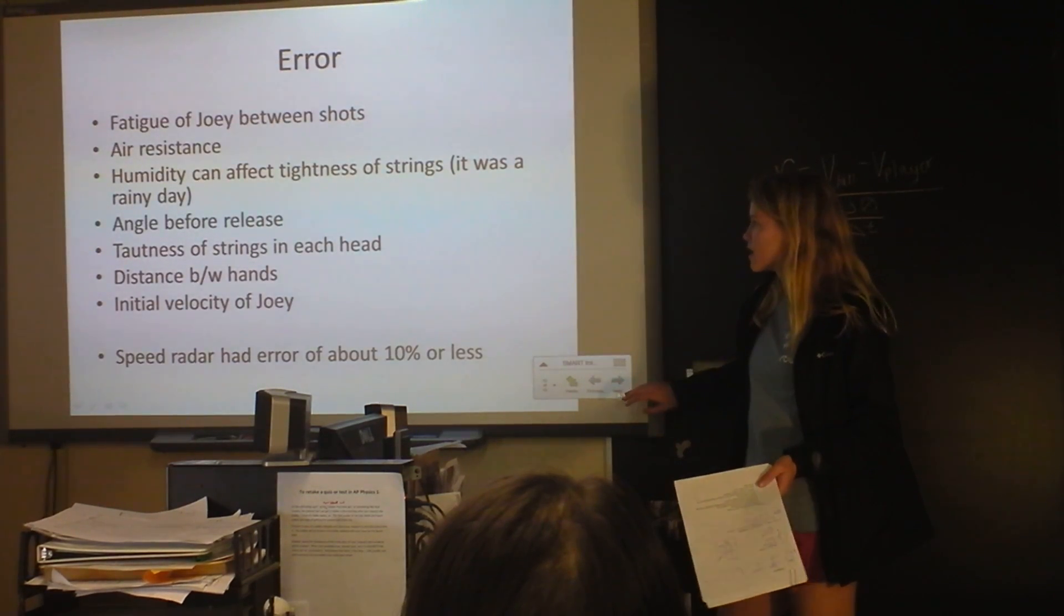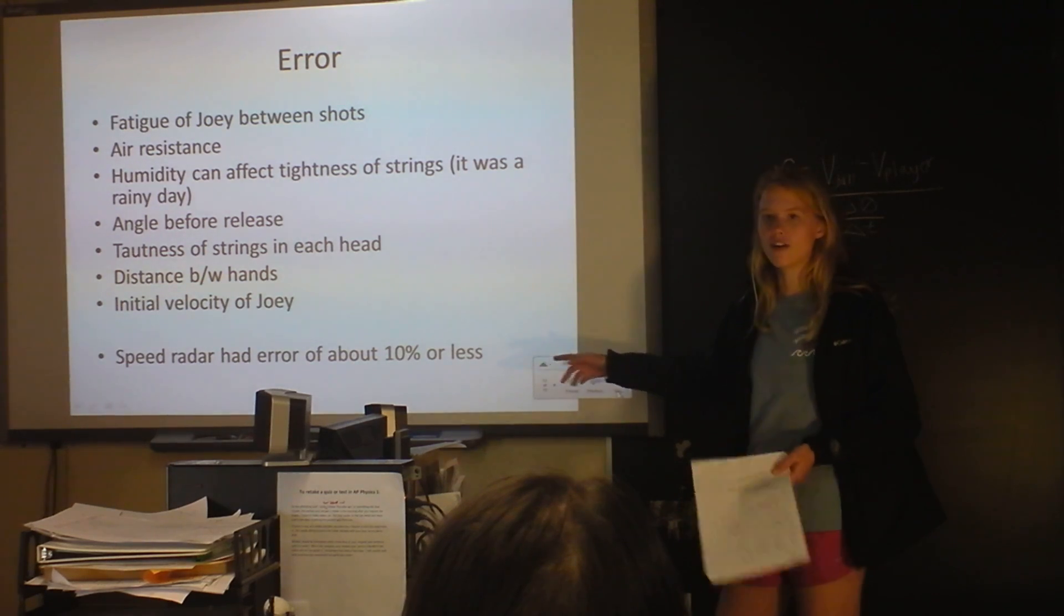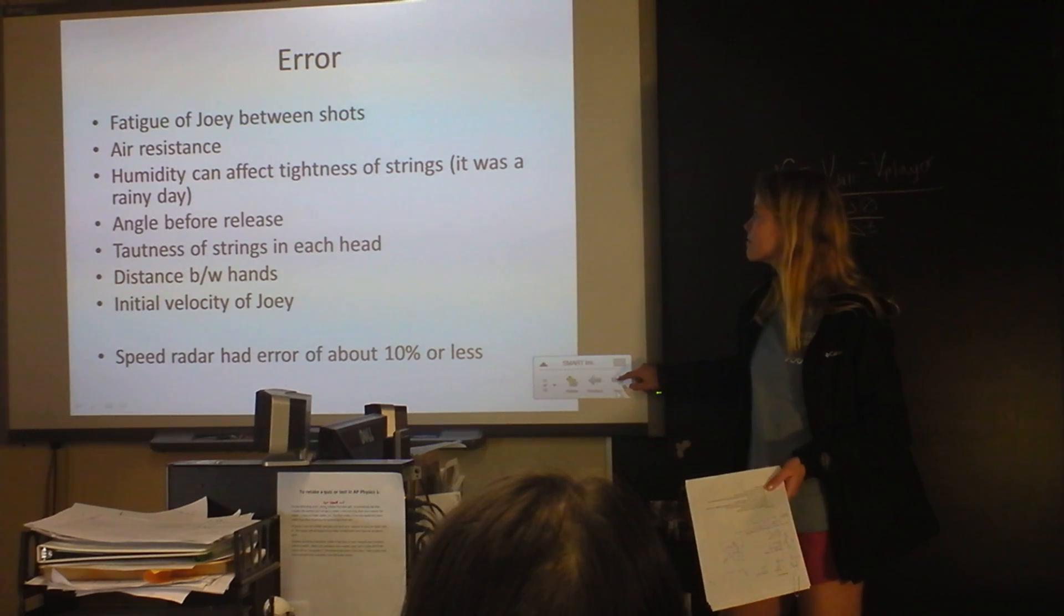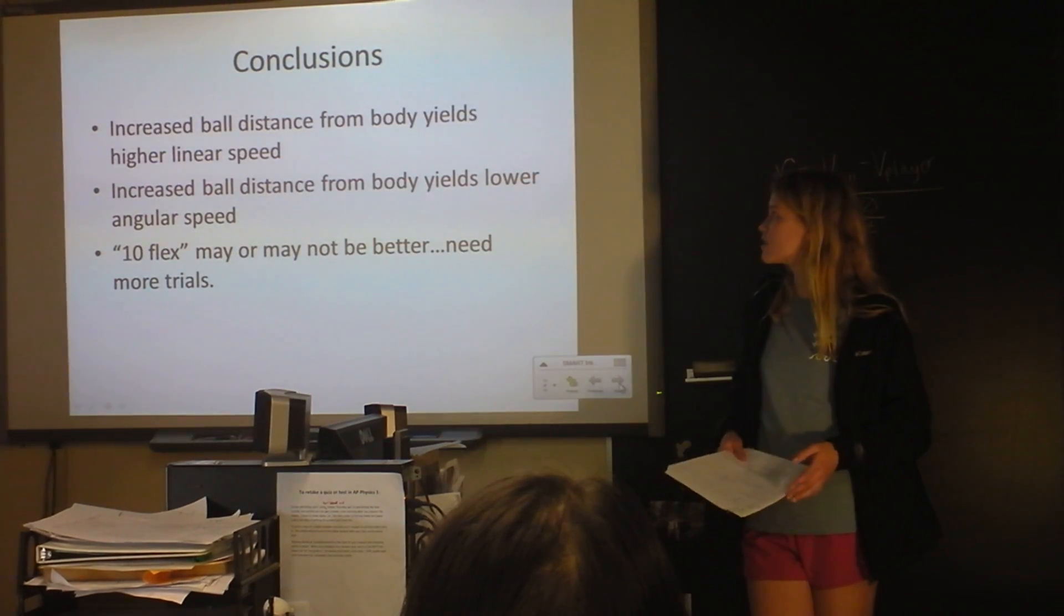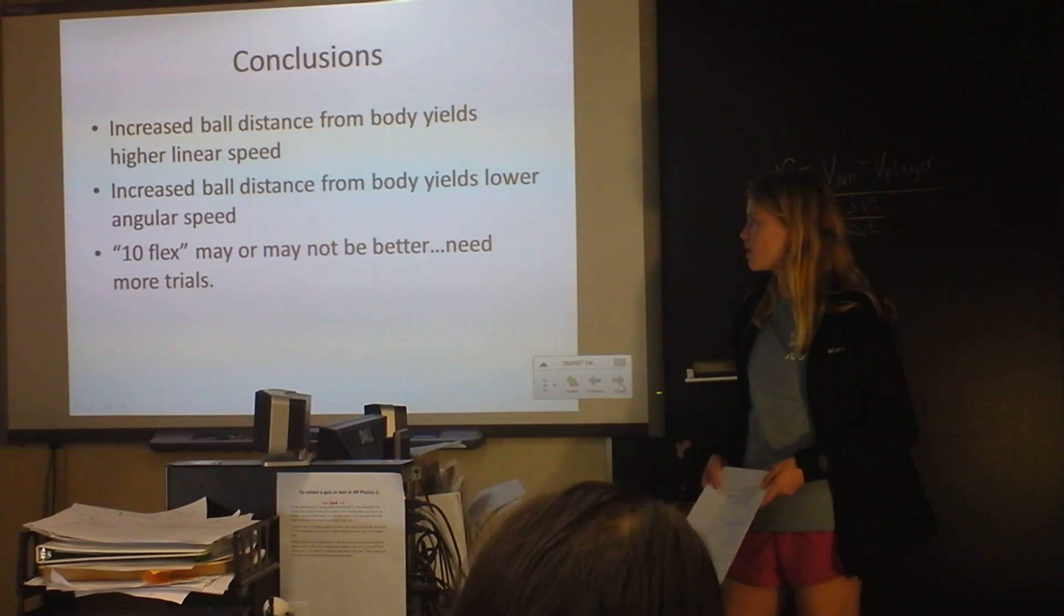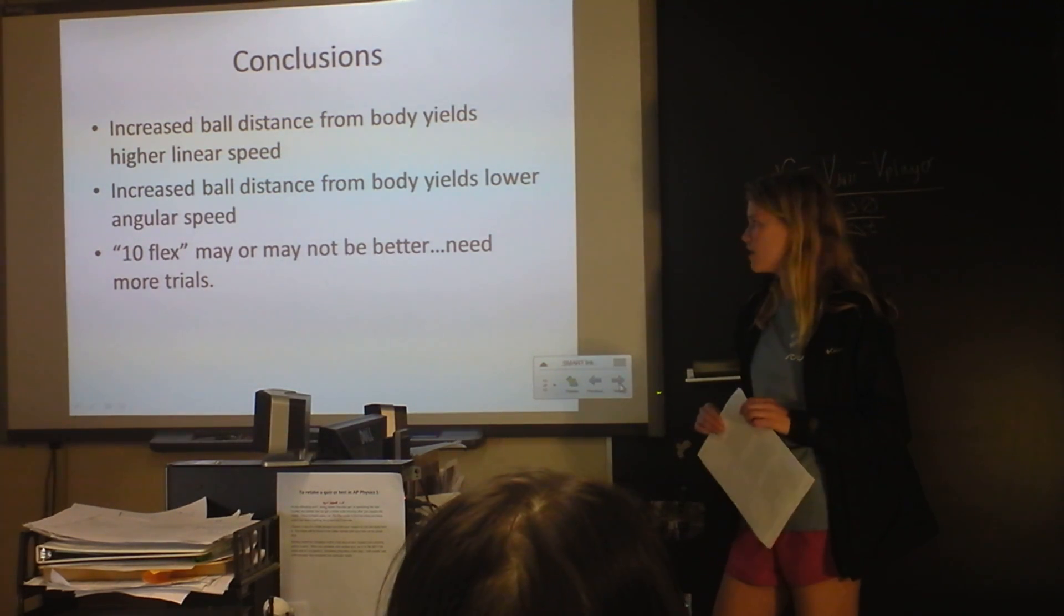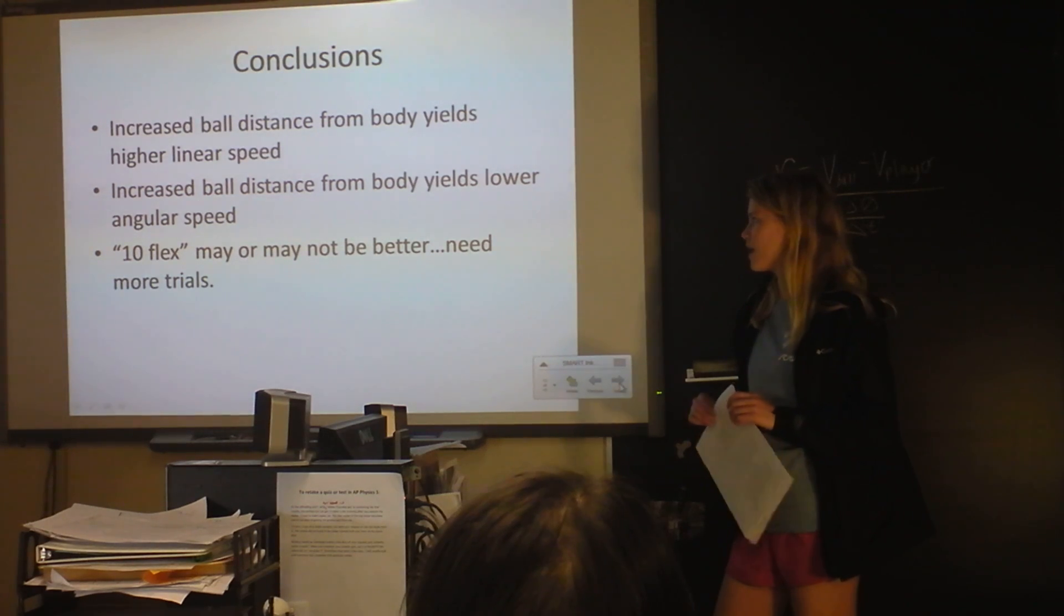This is just some possible error. The speed radar actually had very low error, which was interesting. In conclusions, increased ball distance from body yields higher linear speed. Increased ball distance from body yields lower angular speed. And the 10 degree tilt may or may not be better but I need more trials.